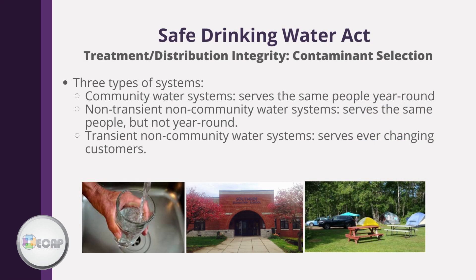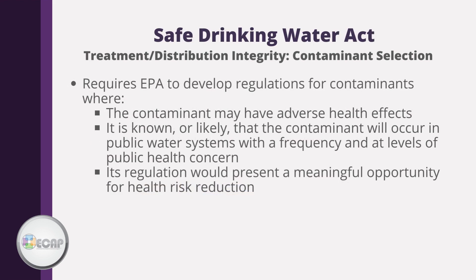There are three types of drinking water systems: community water systems, which serve the same people year-round; non-transient, non-community water systems, which serve the same people but not year-round, such as schools and workplaces; and transient, non-community water systems, which serve ever-changing customers such as campgrounds and gas stations. The 1996 amendments require the EPA to regulate contaminants where the contaminant may have adverse health effects, is known or likely to occur in public water systems at levels of public health concern, and where regulation would present a meaningful opportunity for health risk reduction.